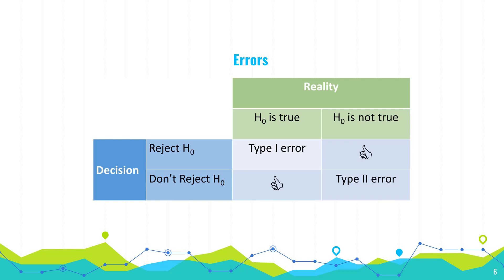Alternatively, maybe the null hypothesis is not true — the mean isn't 70 — and yet our sample data is so close to 70 that we end up not rejecting the null hypothesis. That's called a type two error, where we're failing to detect a significant difference. We want to limit these errors. Statisticians have decided that we say: if the null hypothesis is true, we want to limit the probability that we make a type one error — set a limit on that, like 5% or 1%. The significance level is the probability that you reject the null hypothesis when it is true — that's the probability of making a type one error.